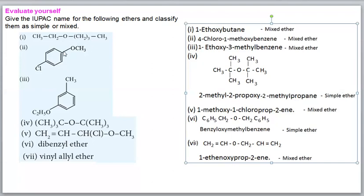For compound 2: it contains methoxy and chloro substituents on a benzene ring. The alkoxy group is more prior than chloro. Numbering: the methoxy is at position 1, chloro is at position 4. IUPAC name: 4-chloro-1-methoxybenzene.